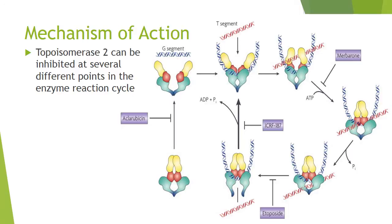Topoisomerase-2 can be inhibited at several different points in the enzyme reaction cycle, which can generate different biochemical and cellular consequences. One simple mode of inhibition is to inhibit a step early in the enzyme reaction cycle. For example, competitive inhibitors of ATP binding prevent strand passage and do not generate enzyme-mediated DNA damage.